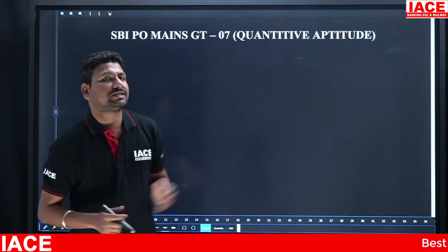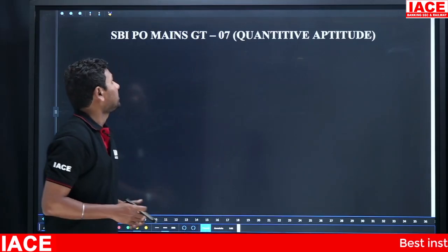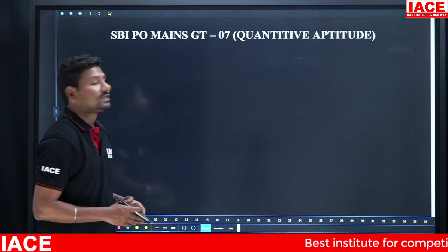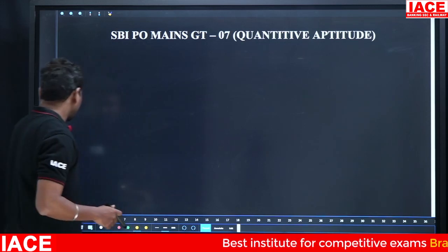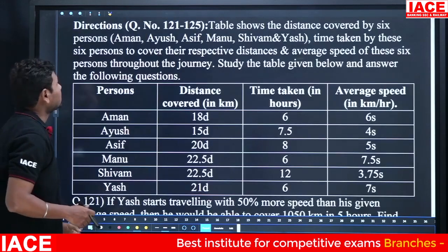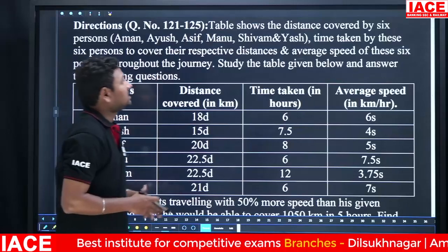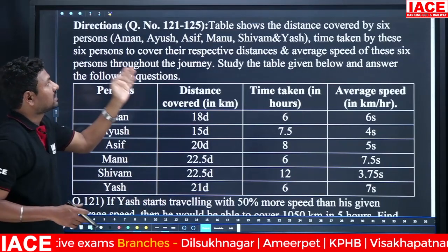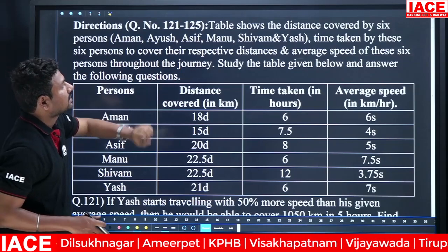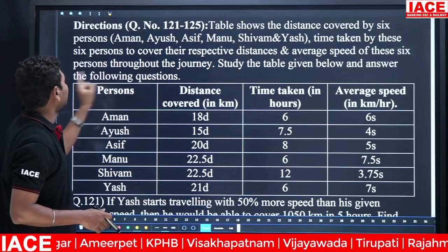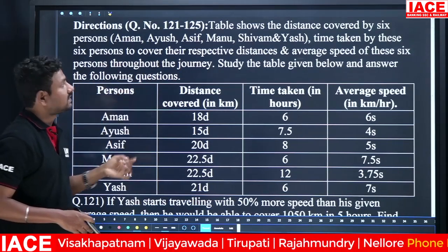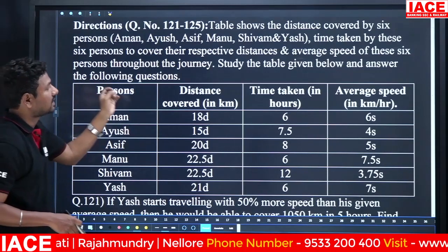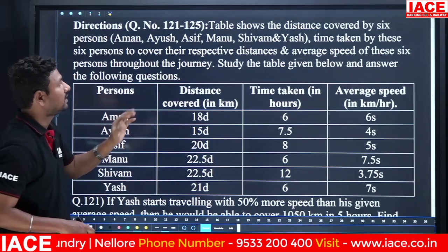Dear students, today our discussion is SBA Grand Test 07 Quantitative. The main purpose is to look at the questions. The table shows the distance covered by six persons: Aman, Ayush, Asif, Manu, Shivaman, and Yash. It shows the time taken by these six persons to cover their respective distances and the average speed throughout the journey. Study the table and answer.